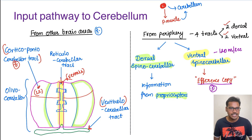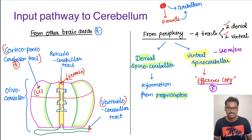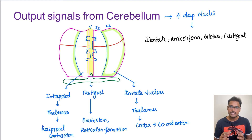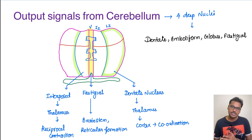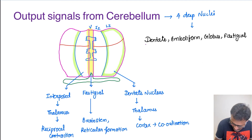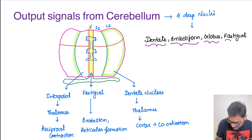If there is a cerebellar dysfunction, these moment-to-moment corrections will not be done. Coming to the output signals from the cerebellum — the output goes first to the deep nuclei, and from the deep nuclei it goes to other regions of the body. The four deep nuclei present in the cerebellum are the dentate, emboliform, globose, and fastigial. The emboliform and globose together are represented as the interposed nucleus.